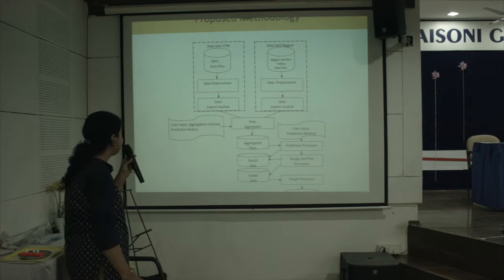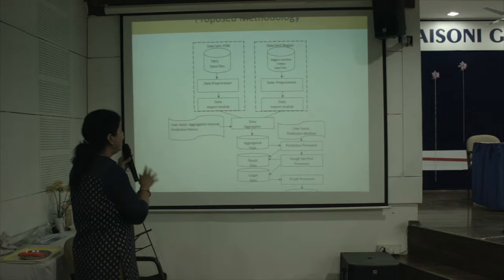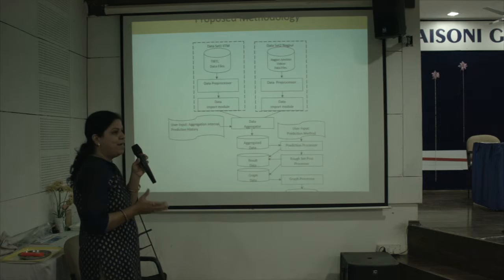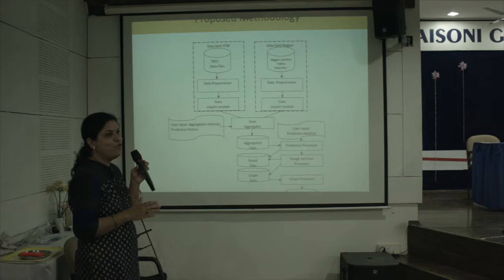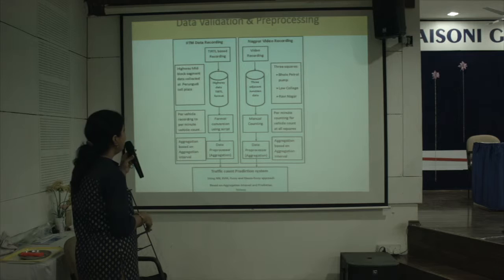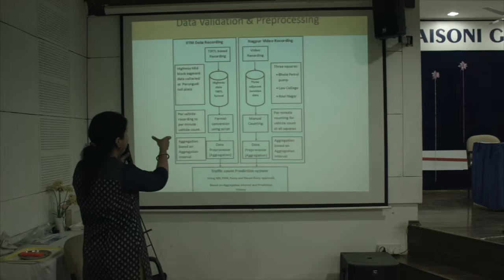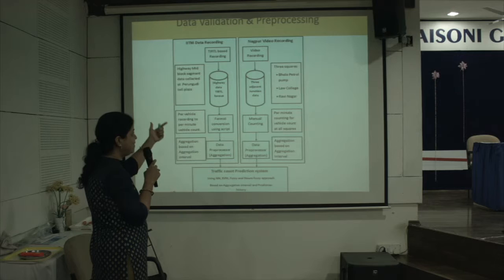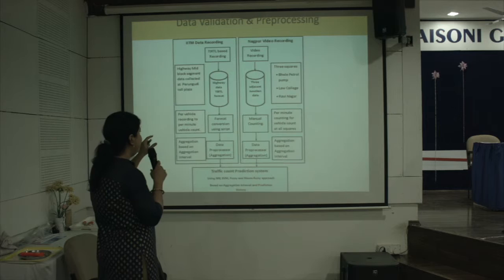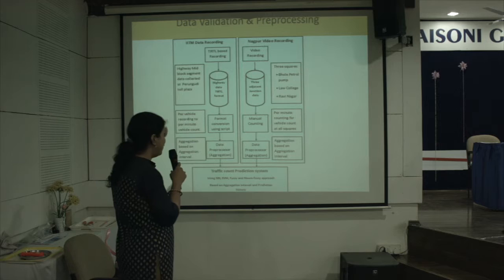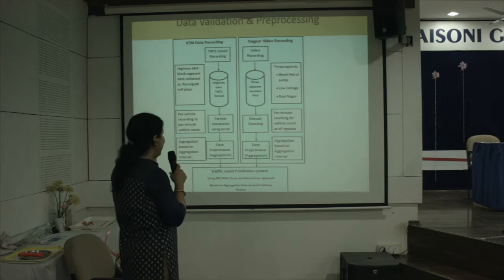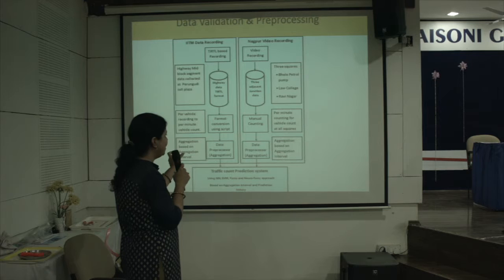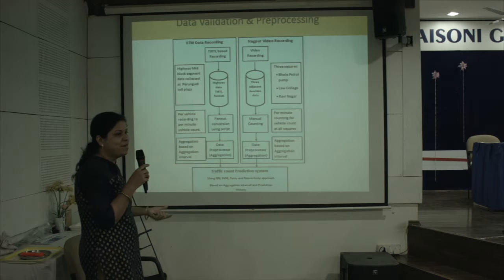The proposed methodology uses two datasets aggregated at different time intervals, predicted by four different methods, with rough set used as a post-processor to validate the prediction result. Data validation and pre-processing: the first dataset is obtained from an infrared traffic logger — the TI-ITL sensor — and the second dataset from video recording at three ITL intersections. The first dataset is in TI-ITL format and converted using a script into per-minute vehicle recordings, then aggregated at 1-minute, 5-minute, 10-minute, and 15-minute intervals.